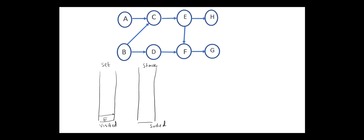We explore the children of E. We have the only one child, H. Since H has no children, we can move it to the top of the stack. Next, we go back to E. E has another child, F, and F has a child, G. G has no child, so we can insert it into the stack. We go back to F, and since F has no unvisited children, we can also insert it at the top of the stack. Next, we go back to E. Now E has no unvisited children, so we can insert it at the top of the stack.